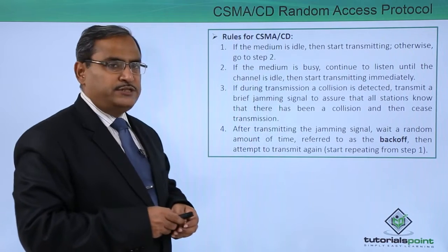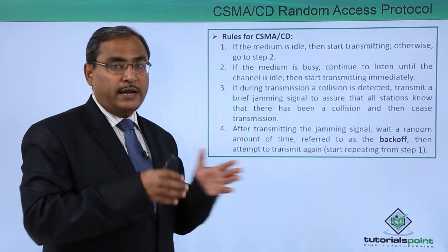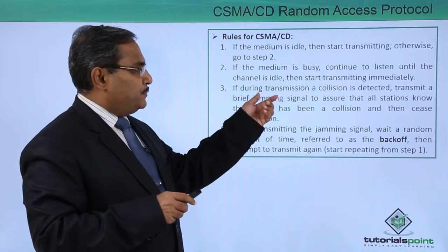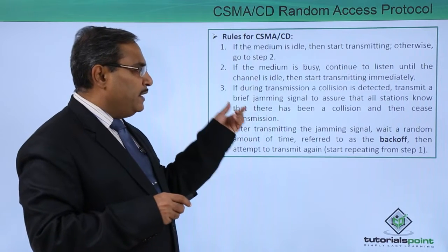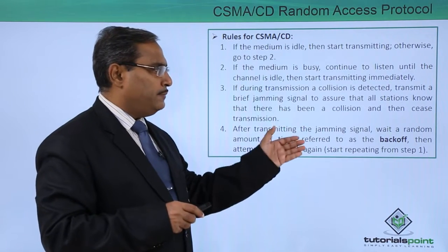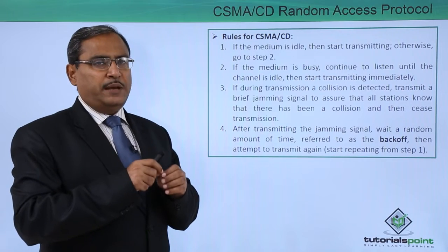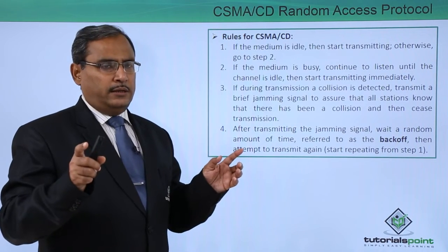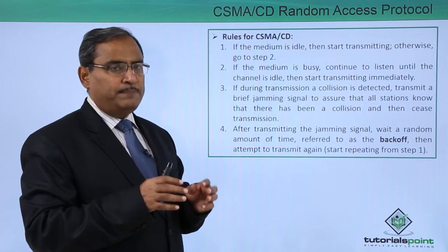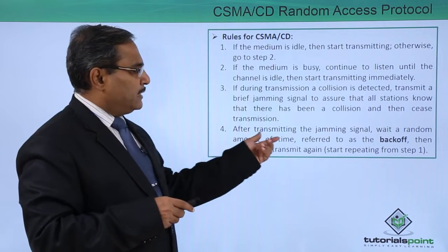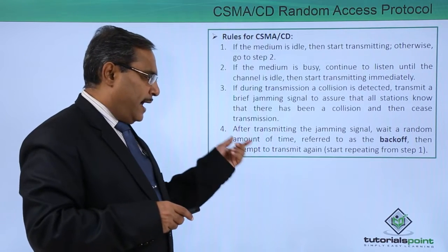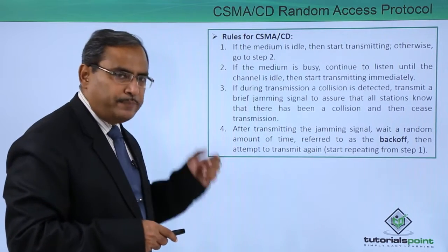If during transmission a collision is detected — and this is the main difference between CSMA and CSMA-CD — during transmission you are listening, and if a collision is detected, transmit a brief jamming signal to assure that all stations know there has been a collision, and then cease transmission. After transmitting the jamming signal, wait for a random amount of time, referred to as a backoff, then attempt to transmit again, repeating from step 1.